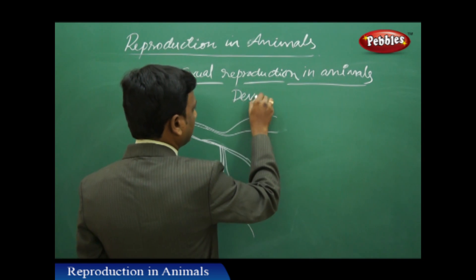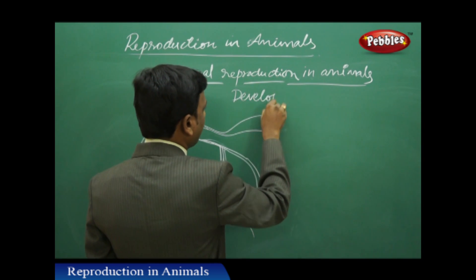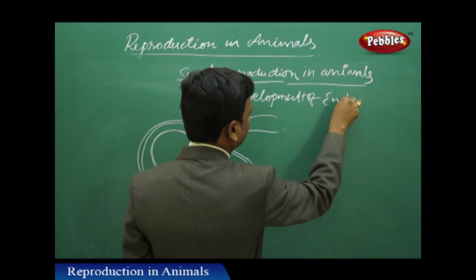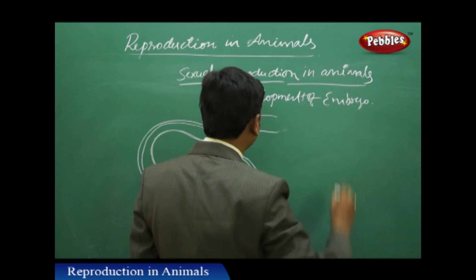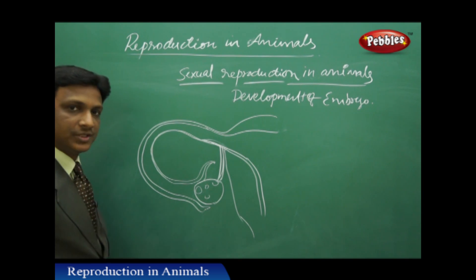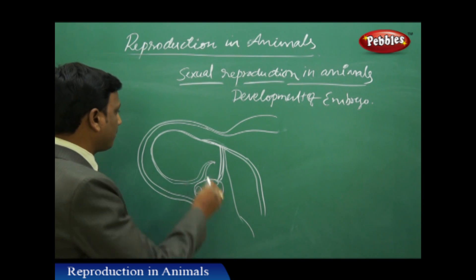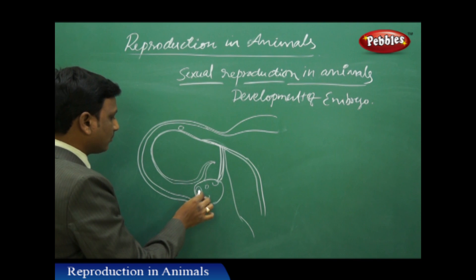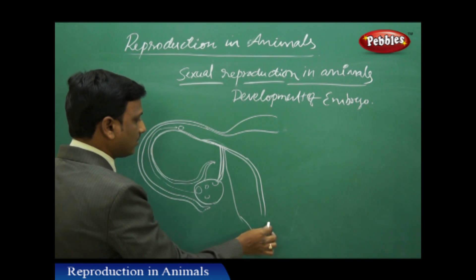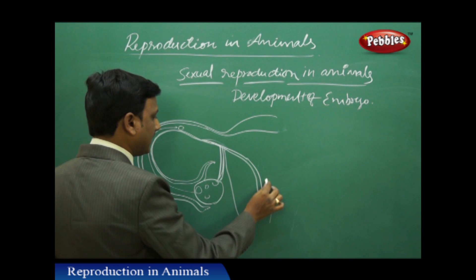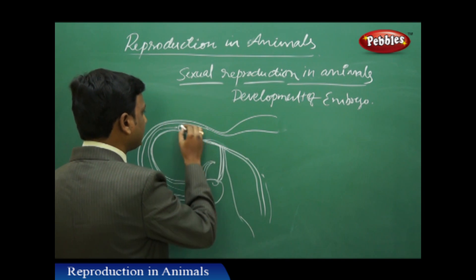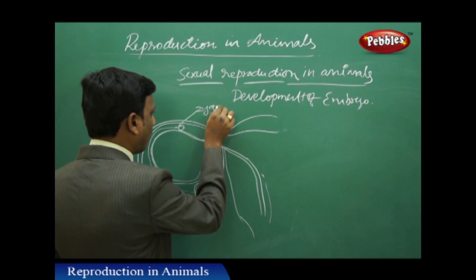Let us see the development of the embryo. We have seen that internal fertilization occurs in the human female reproductive system. When the ovum, the female gamete, reaches the fallopian tube, and the male gamete also reaches the fallopian tube, fertilization takes place and a zygote is formed.